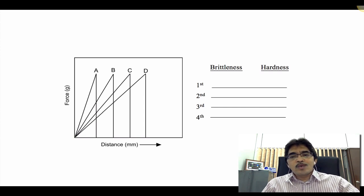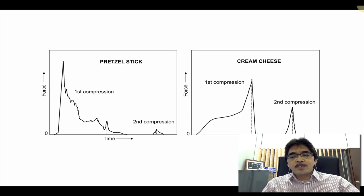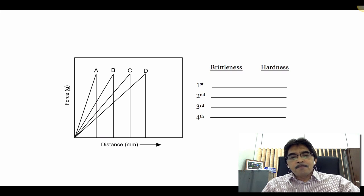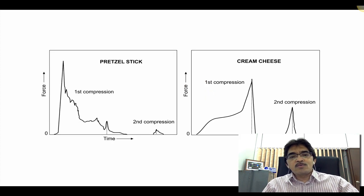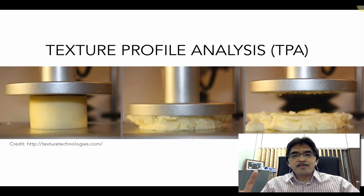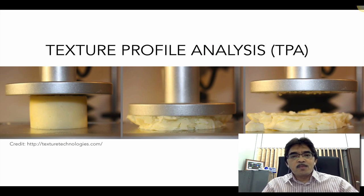In this presentation, I will explain two questions from the test. The first involves a graph of force against distance, where you interpret results in terms of brittleness and hardness and rank samples from most to least brittle and hardest to least hard. The second gives you a texture profile analysis for two samples — a pretzel stick and cream cheese, or in your test, a sausage — and you interpret the TPA parameters from the graph.